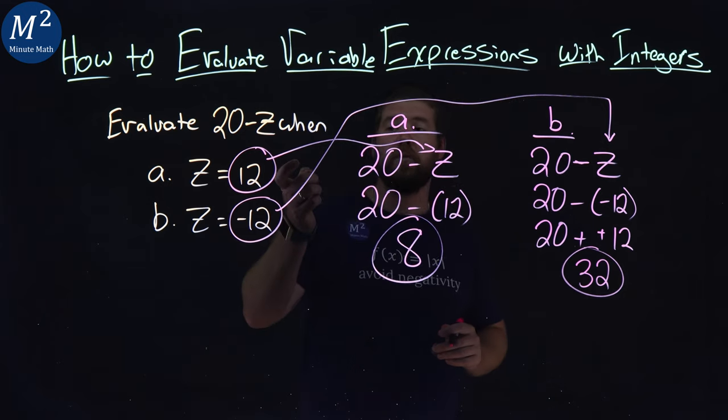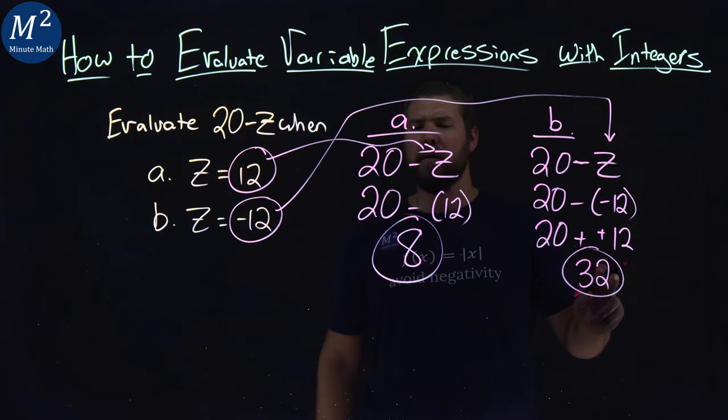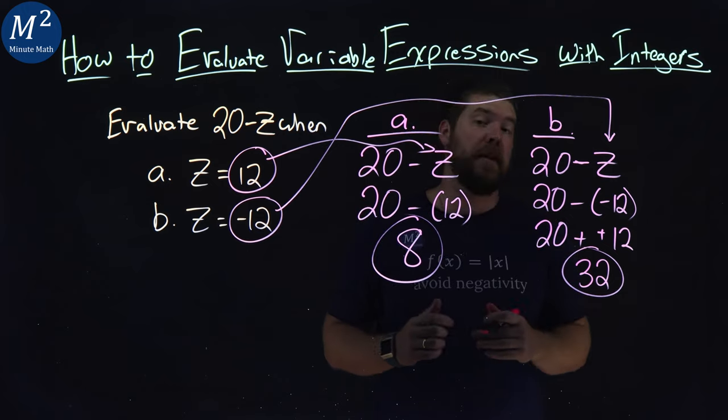So notice when z was 12, we got 8, and when z was negative 12, we got positive 32. That's just kind of how it works out. Sometimes the double negatives make it a positive, but again, two very different answers.